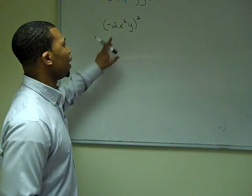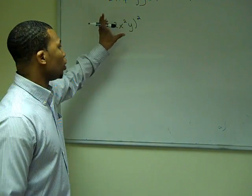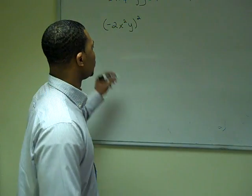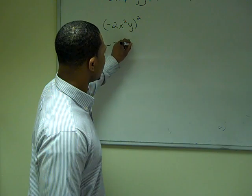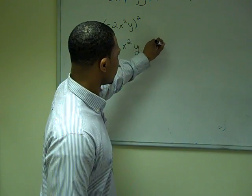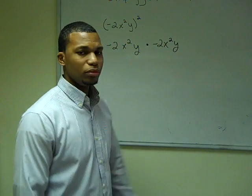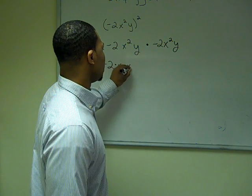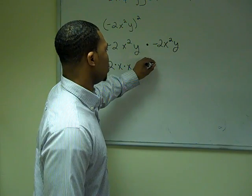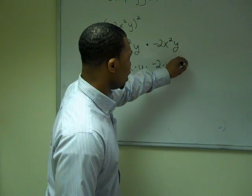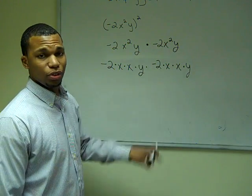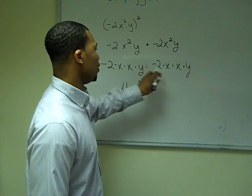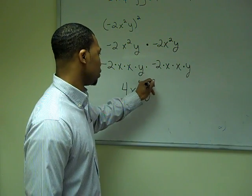Our base is negative two x squared y, and all of this is raised to the second power. Since this whole base is raised to the second power, we multiply the whole base by itself. This becomes negative two times x squared times y, times negative two times x squared times y. Negative two times negative two is positive four, and we have four x's giving x to the fourth power, and two y's giving y squared. So our simplified expression is four x to the fourth y squared.